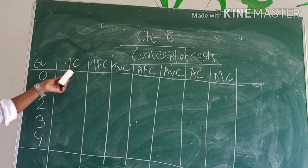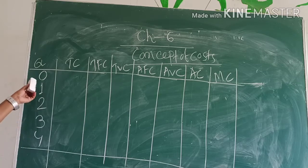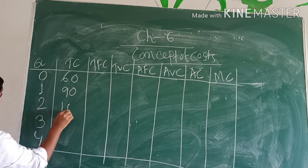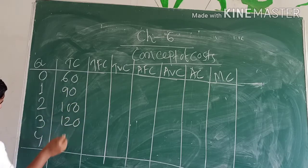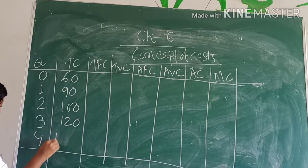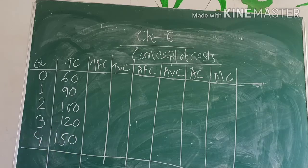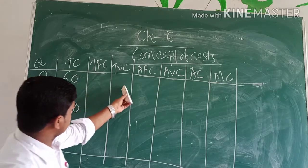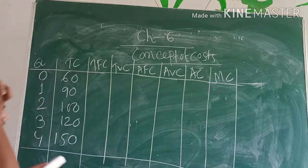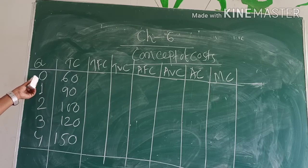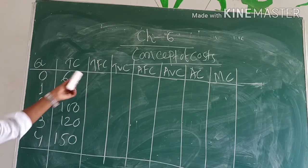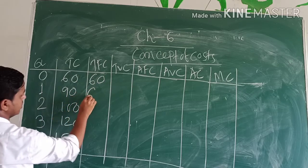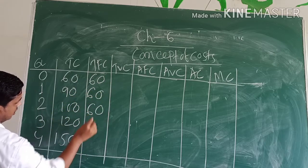So output 0 and total cost 60. When output is 0, total cost is 60, which means TFC is 60, then TFC is 60, then TFC is 60.